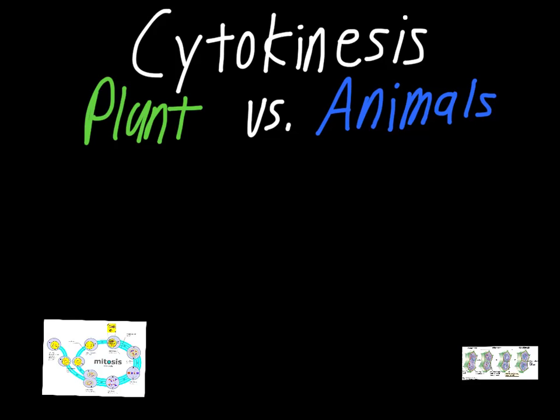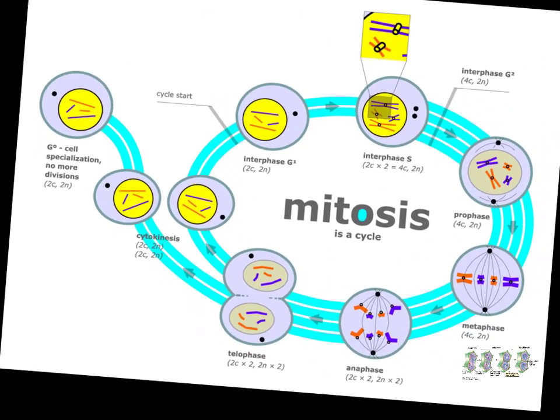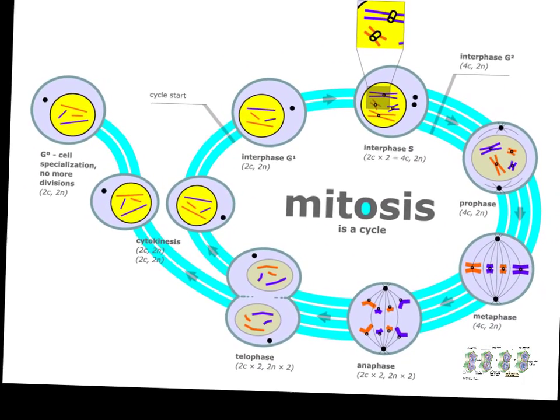This is a short video detailing the differences in cytokinesis between plant and animal cells. Many things when it comes to the process of mitosis are the same with both plant and animal cells, but cytokinesis works a little bit differently because plant cells have an extra piece that animal cells don't — they're dealing with the cell wall as well as the cell membrane.